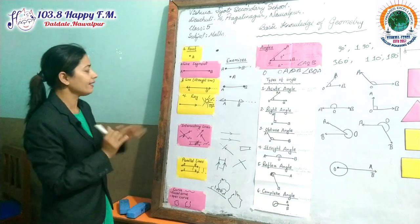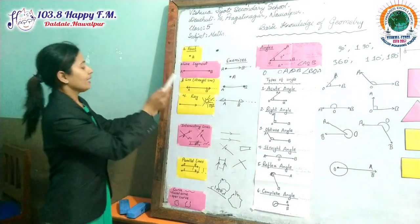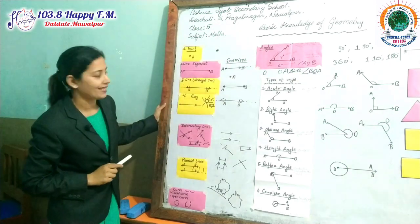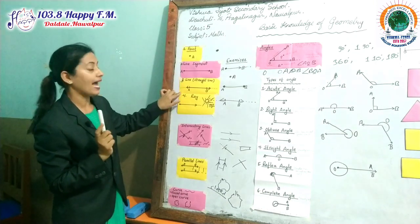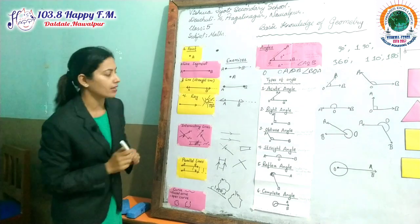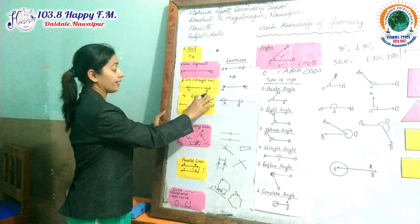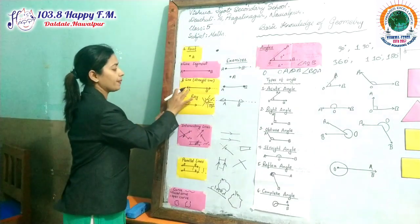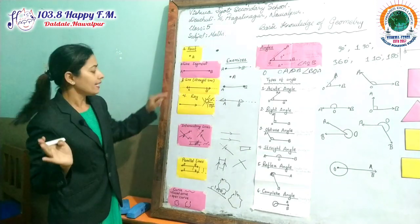The next one is the line, also called straight line. Straight line means the opposite of line segment. In a line segment there is a fixed point, but in a line there is no fixed point — it can be extended from both sides. I have given it the name A and B here, but it is not a fixed line; it can be extended. So it is called a line or straight line.